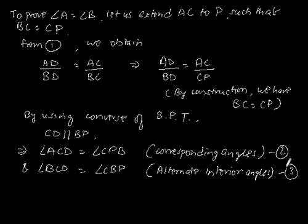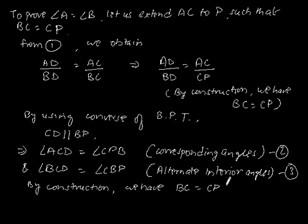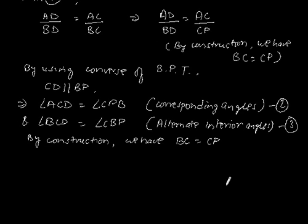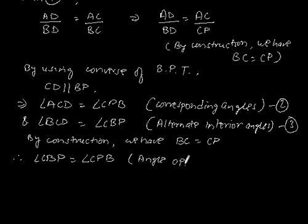Let us say this is equation 3. Now by construction, we have BC is equal to CP, therefore angle CBP is equal to angle CPB, since angles opposite to equal sides of a triangle are equal.